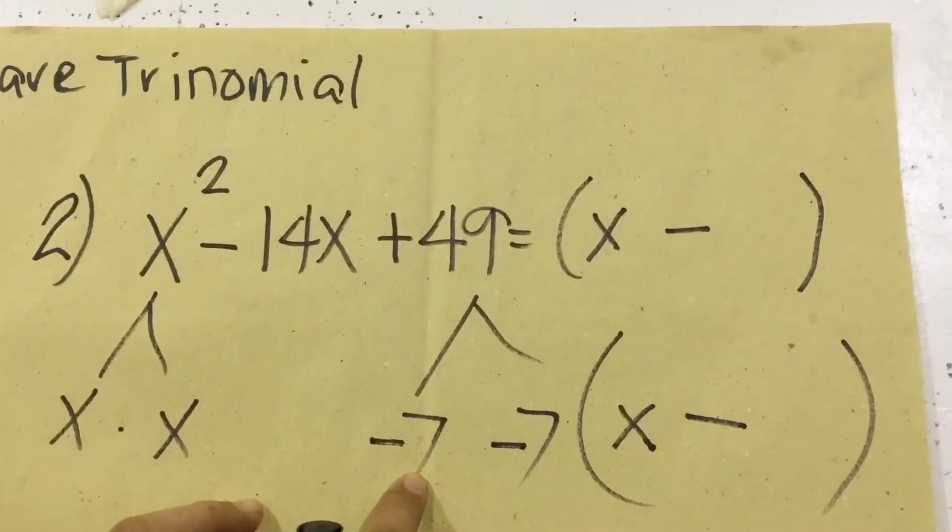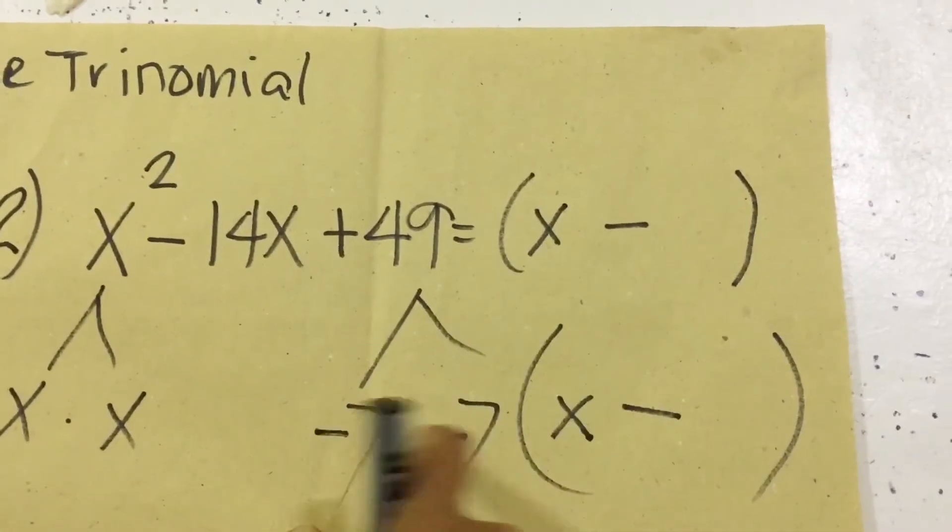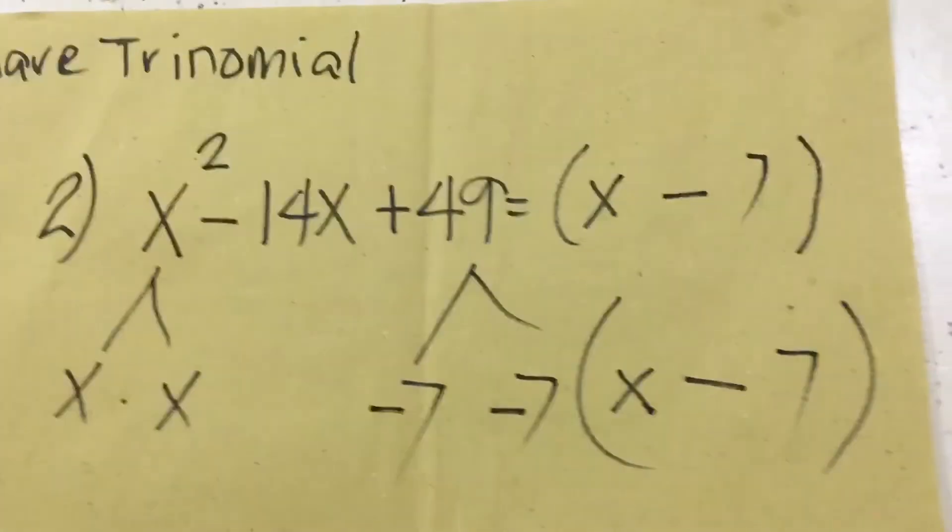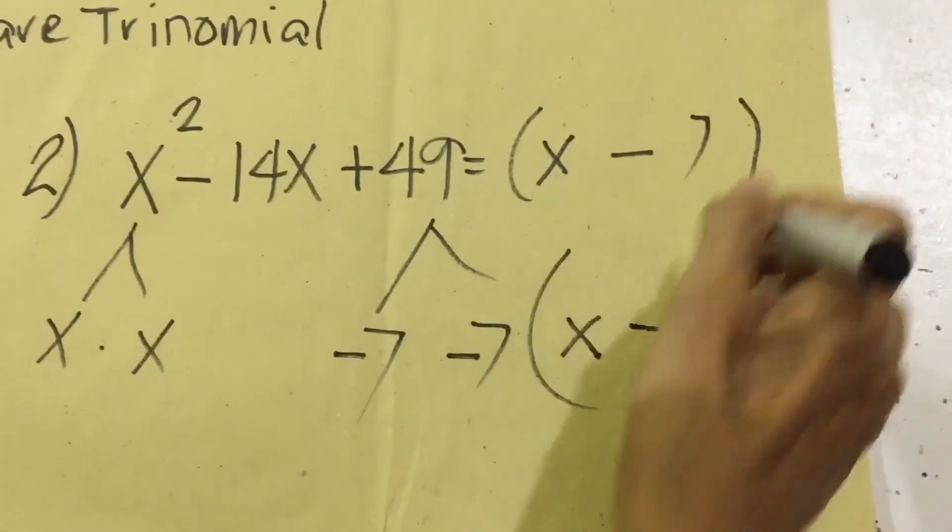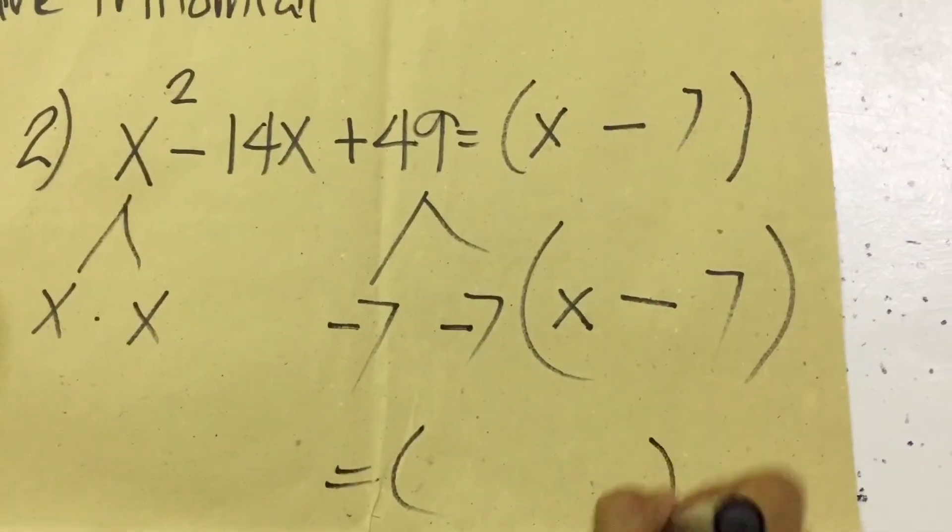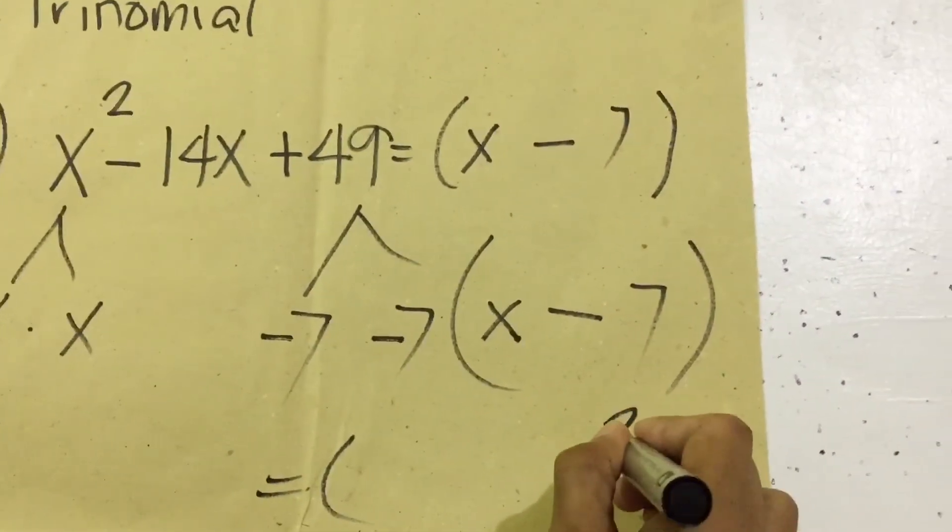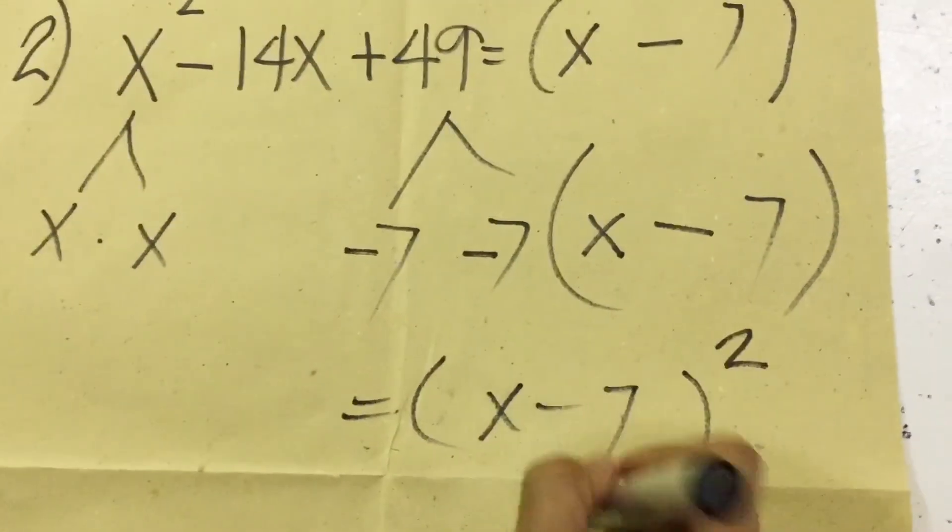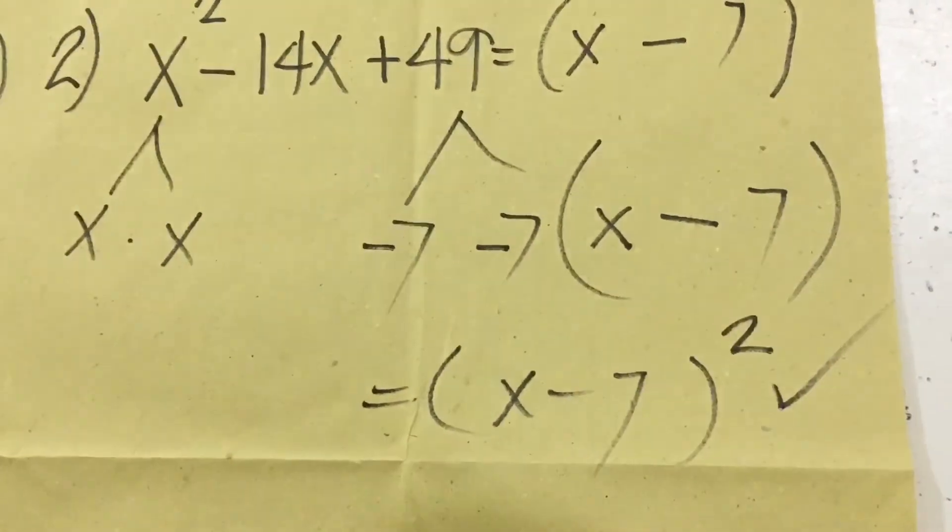Then we have now the factor 7, we are going to write it. Since the result is x - 7, x - 7, we are going to use it in square binomials: (x - 7)². This will be now our final answer.